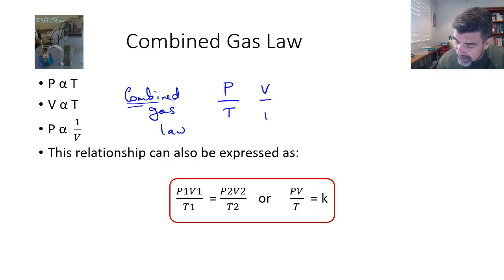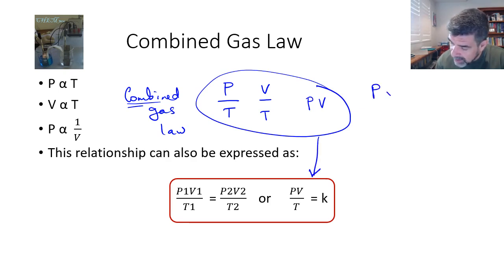And V over T is a constant, and P times V is a constant. And when you bring all of these three different types of relationships together, what we find is that P times V over T is also, for gases, a constant.